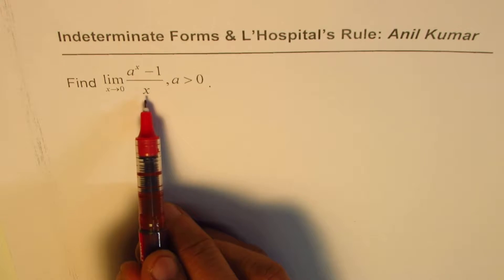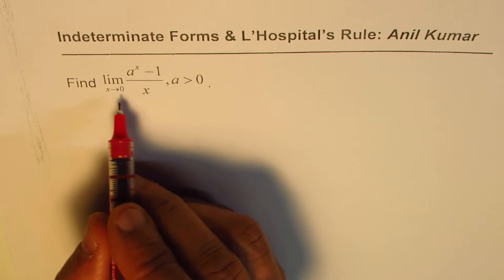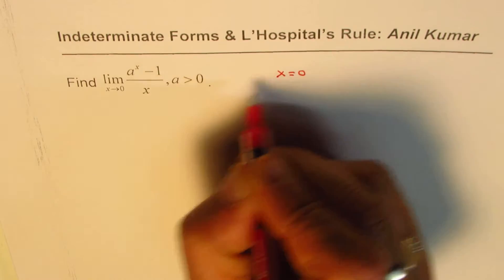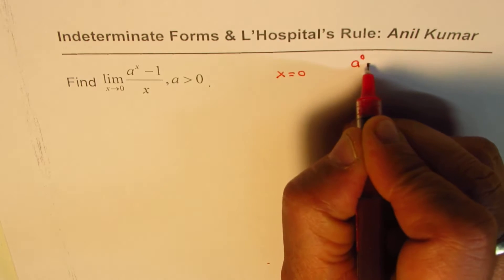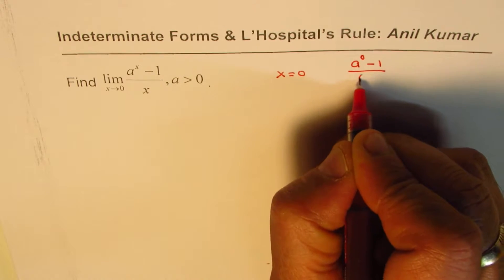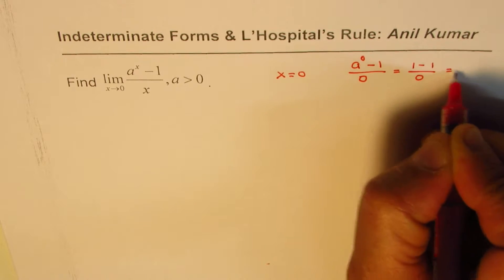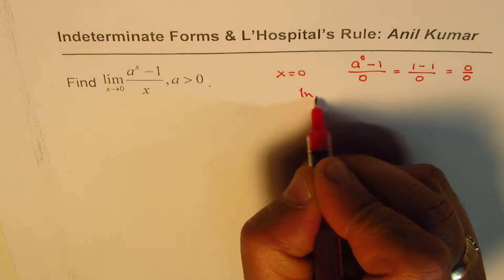Let us check first. I'll substitute x equals 0 in the given function, so we have a to the power of 0 minus 1 divided by 0, and that is 1 minus 1 over 0, or 0 over 0. So this is indeterminate form.